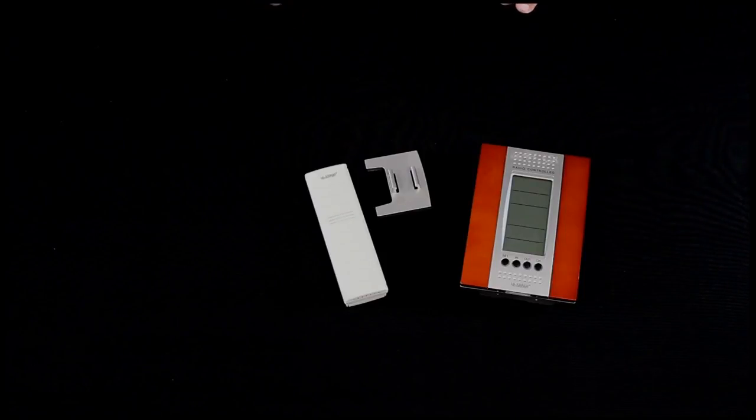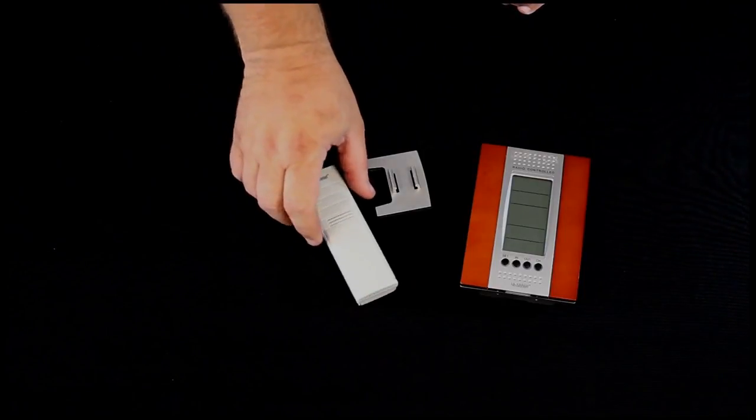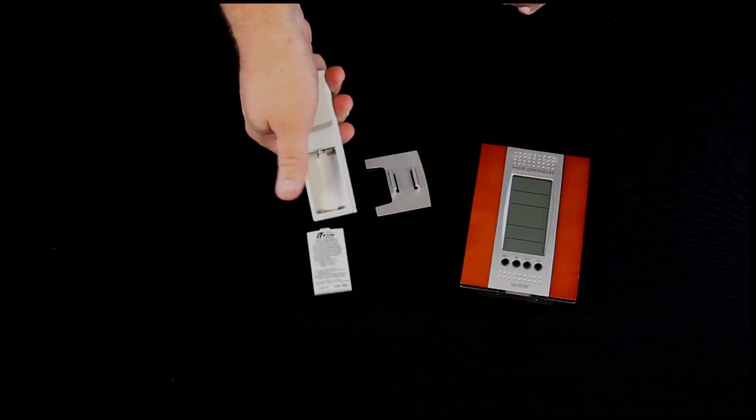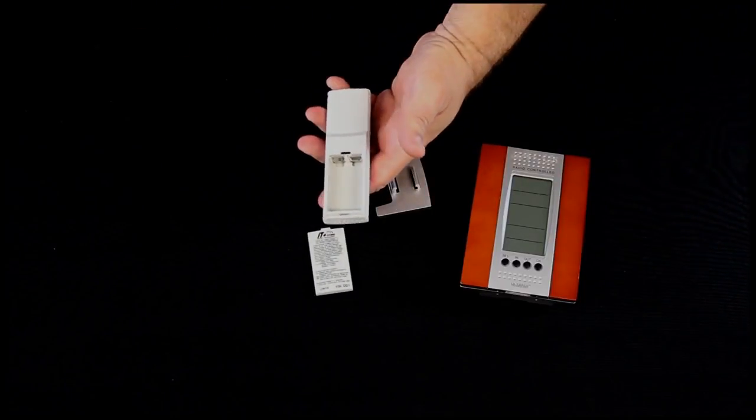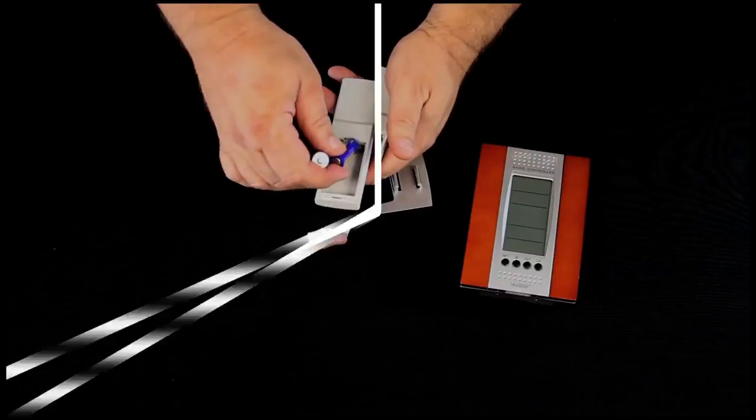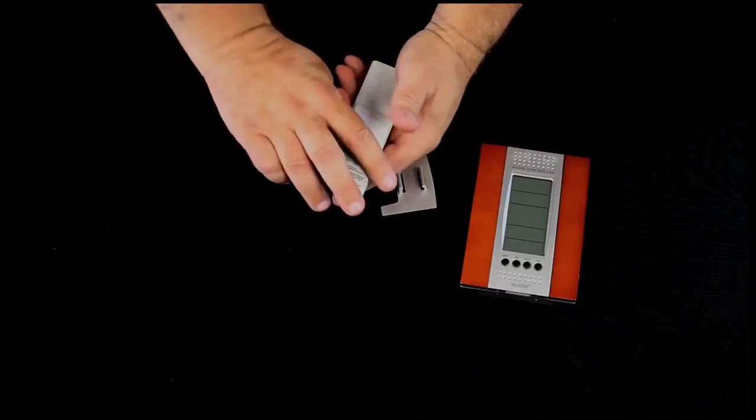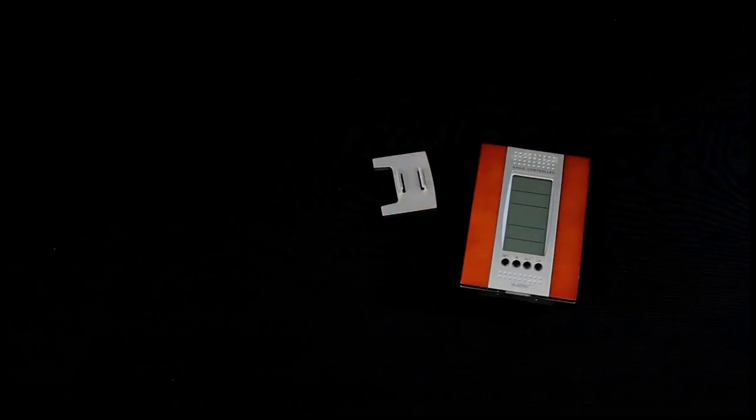First thing we will do is get our outdoor sensor ready to go, very simple. We simply push the battery door downwards, and we put a pair of fresh alkaline batteries into the unit. Once those are in, we're going to move this about three to five feet away for normal setup.